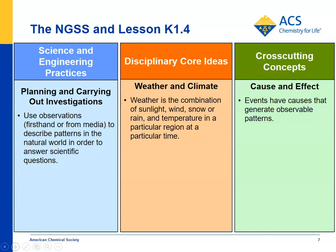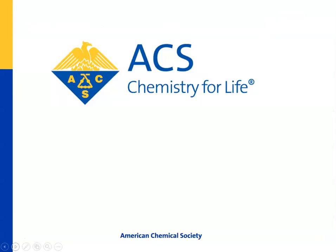For disciplinary core ideas, weather is a combination of sunlight, wind, snow or rain, and temperature in a particular region at a particular time — this lesson is just a close-up look at wind. For cross-cutting concepts, cause and effect: students see that wind has a cause, that when warm air moves up and cool air replaces it, that causes wind, and that the moving particles in wind have the effect of moving objects and causing things to happen. Thanks for listening and watching, and good luck with the lesson.